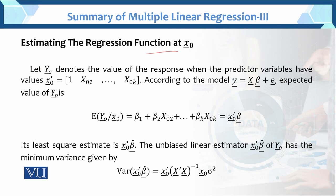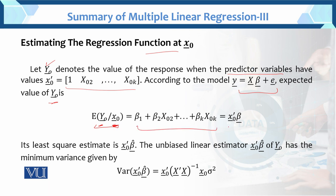Let y₀ be the response variable when the predictor variables have given values. We predict the response (dependent variable) by giving values to the predictor variables. According to the model — this is the regression model in matrix terms — we find the expected value. The expected salary will be the expected value of y₀ given x₀. We predict y₀ given the values x₀ of the independent variables. Further, we write this as x₀' β — this is the model.